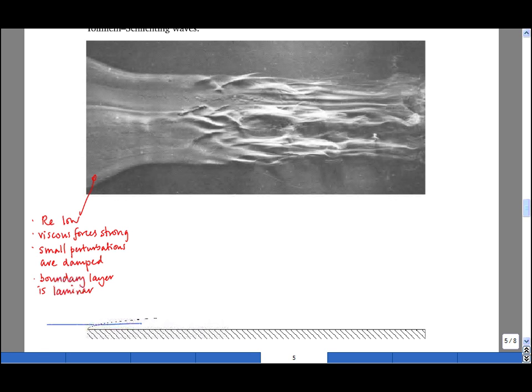In the picture shown here, the free stream is very smooth, and we can just see some Tolmaine-Schlichting waves in this region here. Viewed from the side, these oscillate up and down.